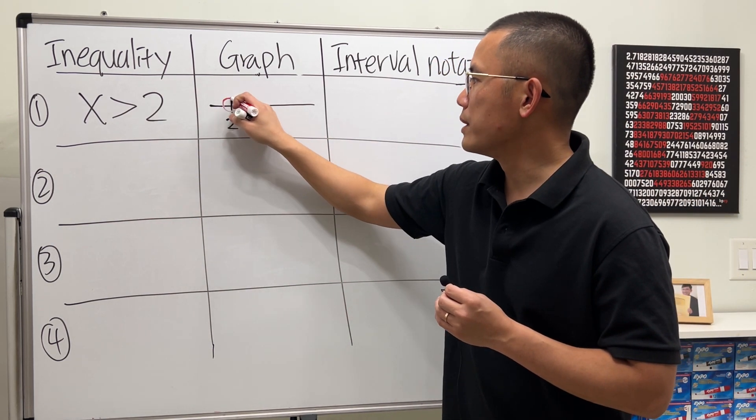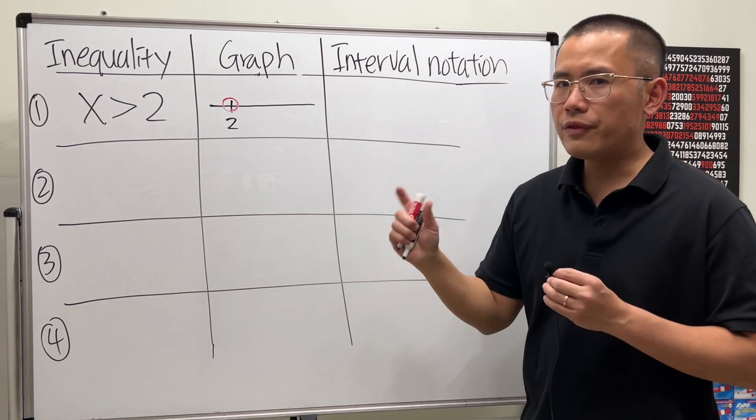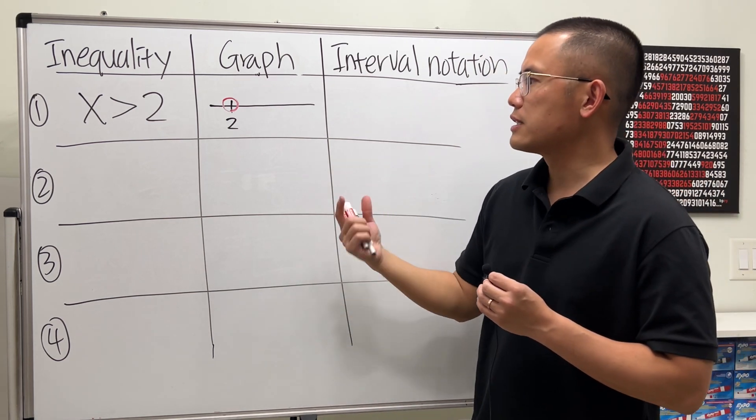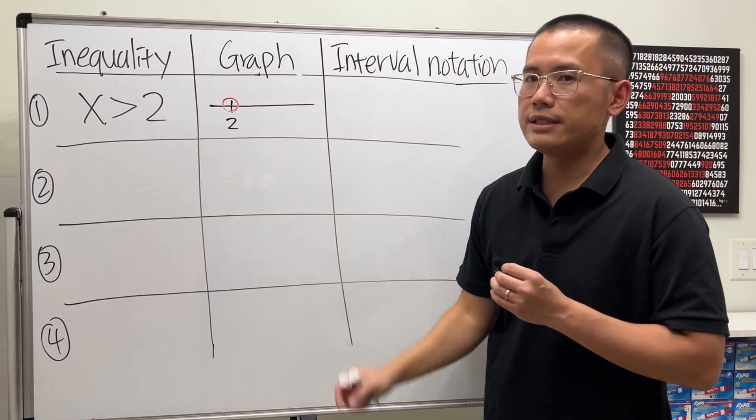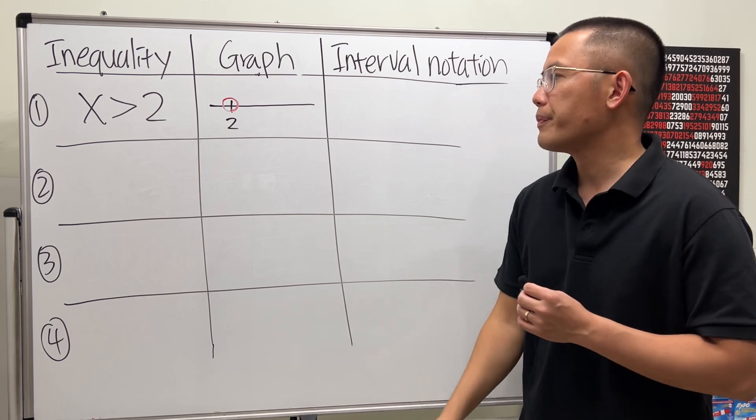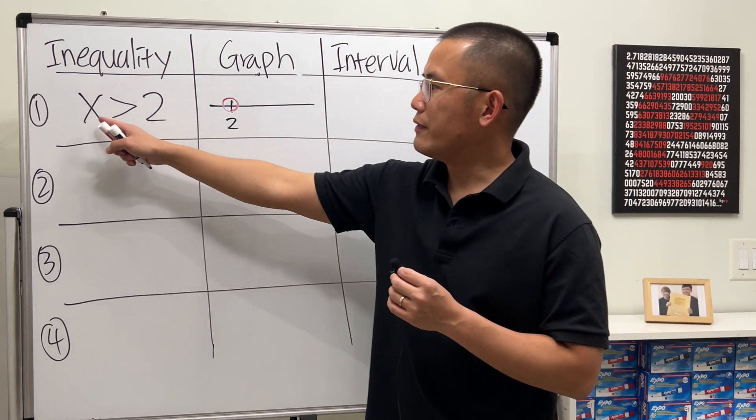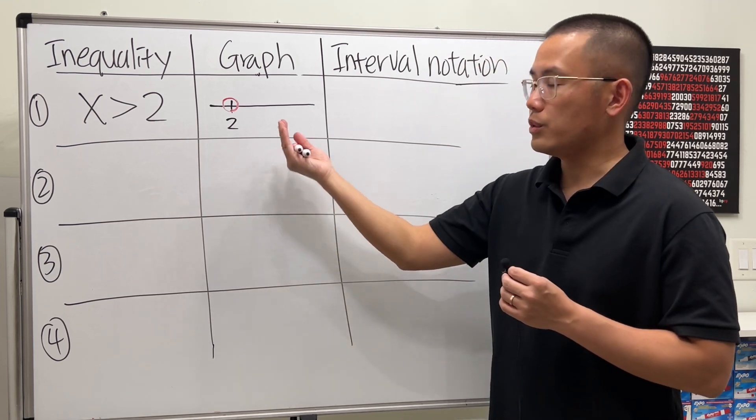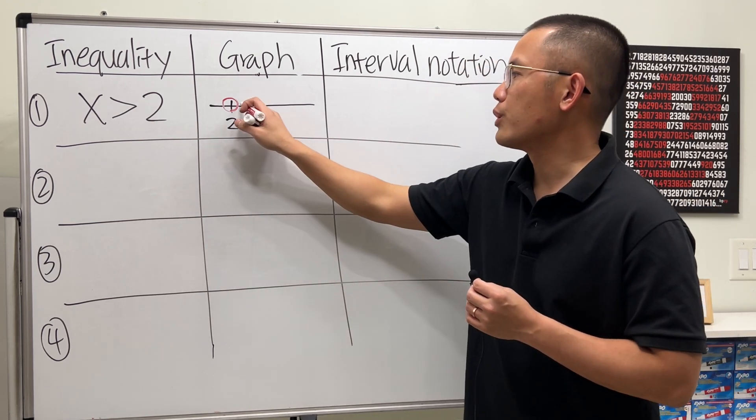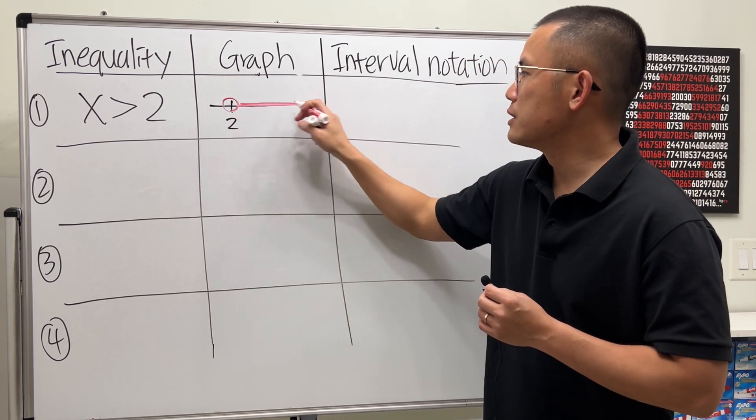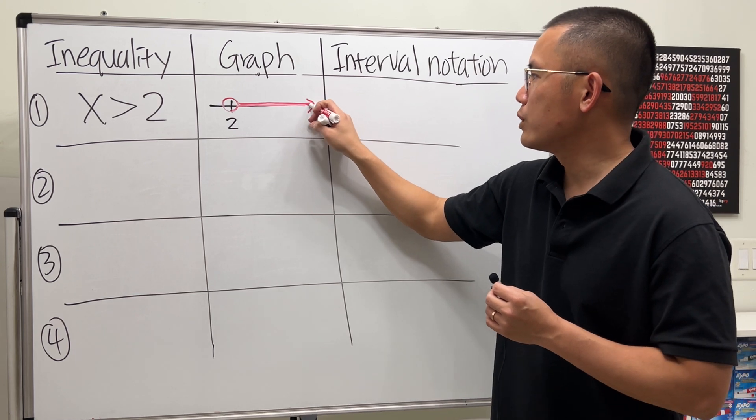On the graph, we can put down an open circle. And some instructors or textbooks might want you to use an open parenthesis right here, which is okay too. But I will use an open circle here. And then because we have x is greater than, that means anything to the right is greater than, so we go to the right. So it will be this portion for the graph, and we go all the way to the right.